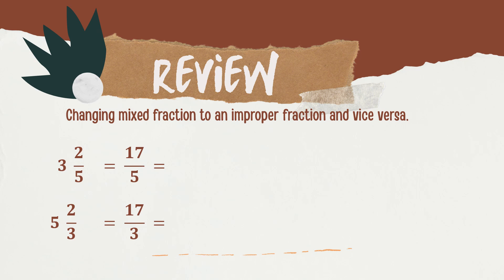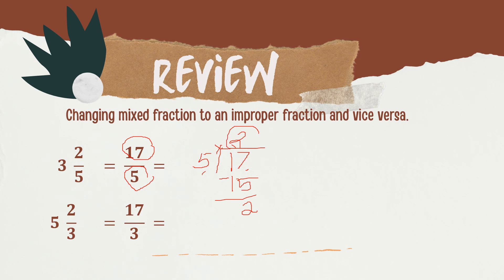Now let us change the Improper Fraction back to a Mixed Number. To do that, divide the numerator by the denominator. So that is 17 divided by 5. How many 5s are there in 17? 3. 3 times 5 is 15. 17 minus 15 is 2. So 3 will be our whole number, 2 will be our numerator, and 5 will be the denominator. The answer is 3 and 2 fifths.